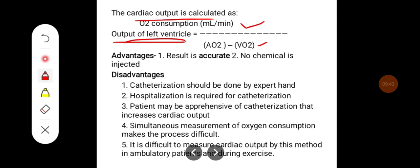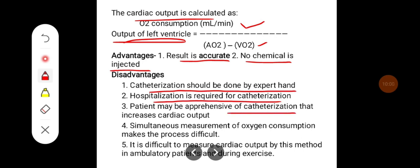The advantage of this method is that it is accurate and no chemical is injected into the body. Disadvantages include that catheterization must be done by expert hands, hospitalization is required, and the patient may be apprehensive, which can increase cardiac output. Simultaneous measurement of oxygen consumption makes the process difficult, and it is hard to measure cardiac output in ambulatory patients or during exercise.